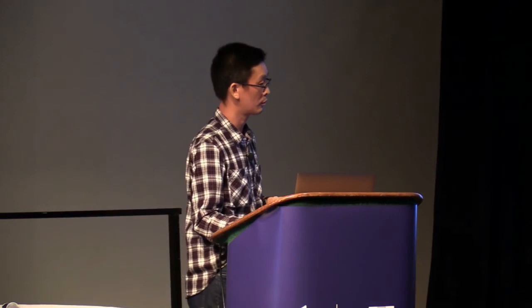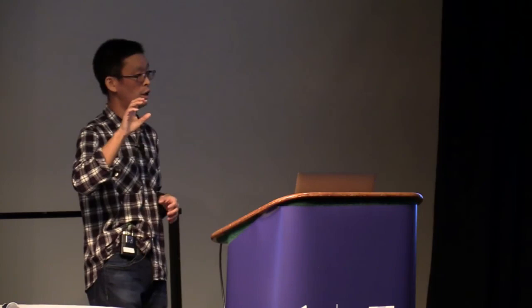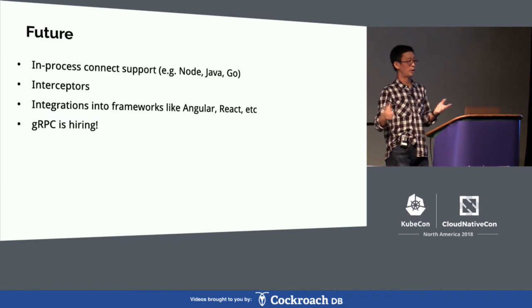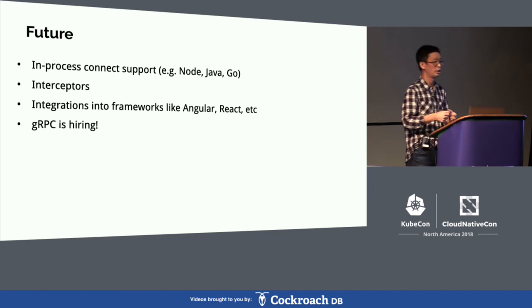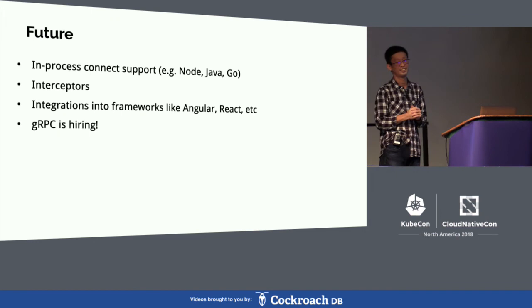Question: what if a user doesn't want to deploy Envoy because they're already using some other proxy? We're implementing in-process support for Go and Java — but we don't have that right now. Thank you very much for attending.